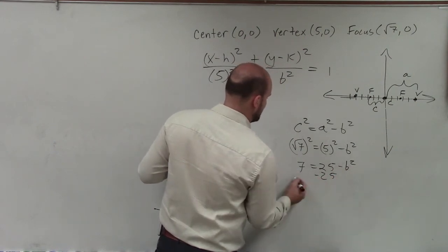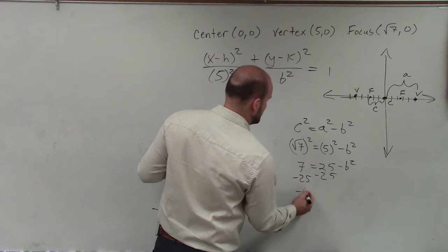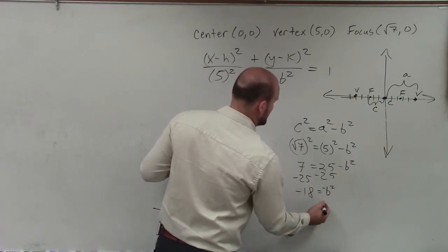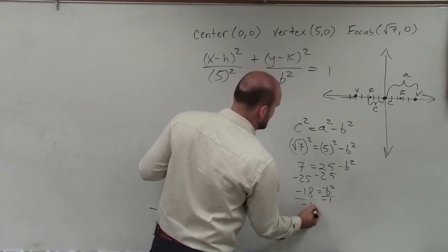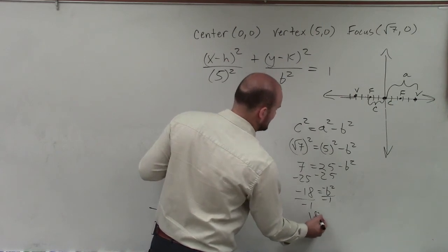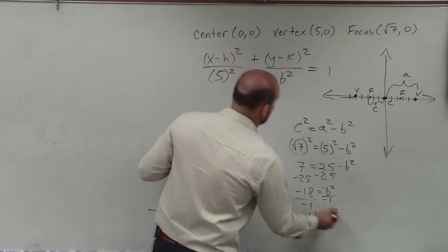Subtract 25, subtract 25. Negative 18 equals negative b squared. Divide by negative 1, divide by negative 1. 18 equals b squared. So therefore, now I can simply write this.